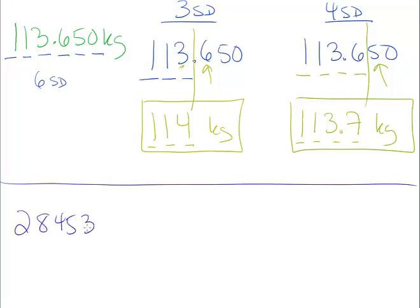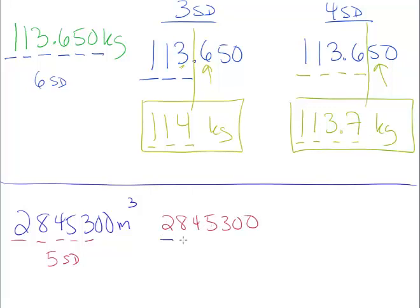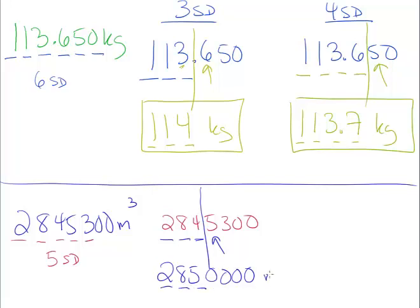Let's try one last example: 2,845,300 cubic meters — perhaps a volume. Counting significant digits: 1, 2, 3, 4, 5 — trailing zeros in a whole number don't count, so there are five significant digits. Rounding to three: we keep 1, 2, 3 and place our barrier. The next digit equals 5, so the third digit goes up from 4 to 5. But don't forget place values — it's still two million, so our answer is 2,850,000 cubic meters.